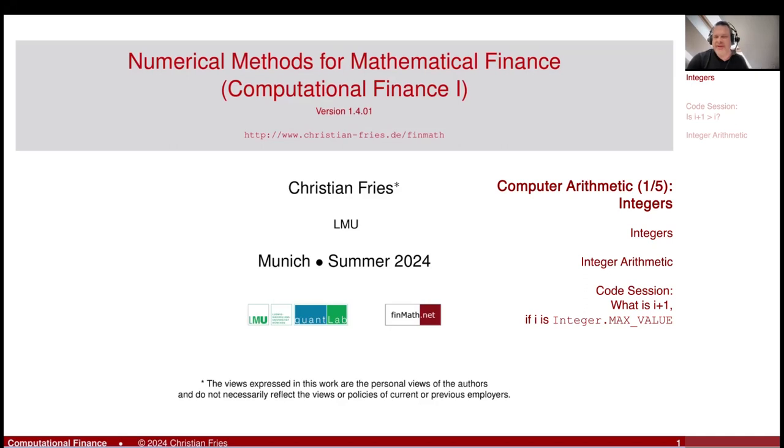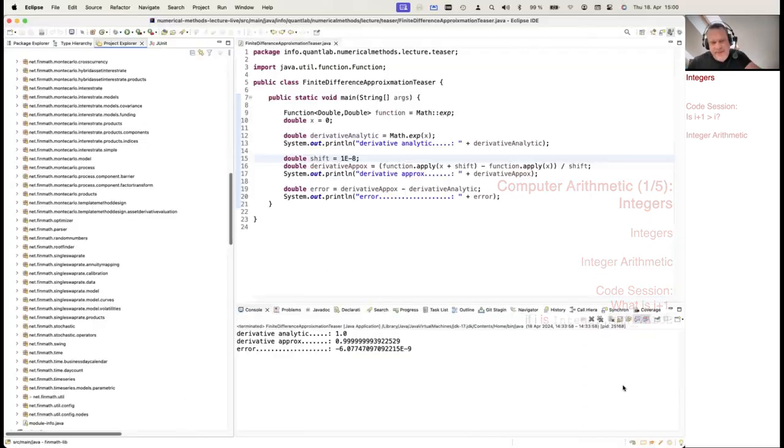Welcome to Numerical Methods. As you saw in my teaser, my finite difference approximation of the partial derivative of the exponential function was becoming worse if the shift size is becoming smaller. So this was here our little teaser.